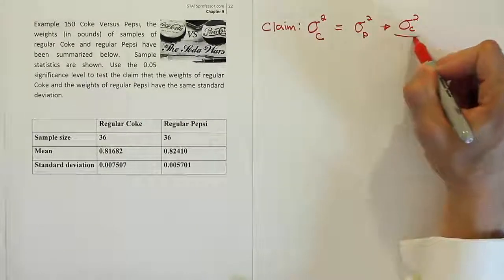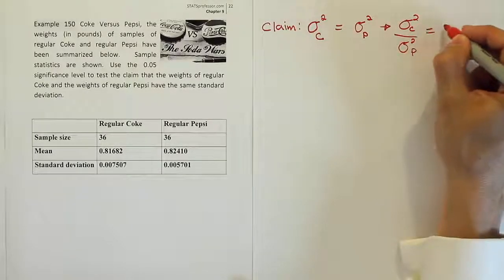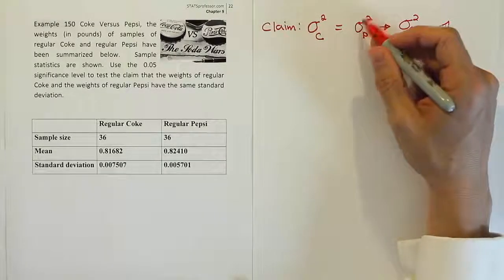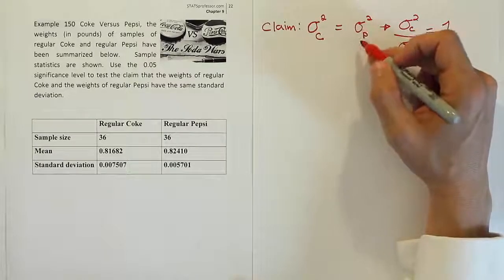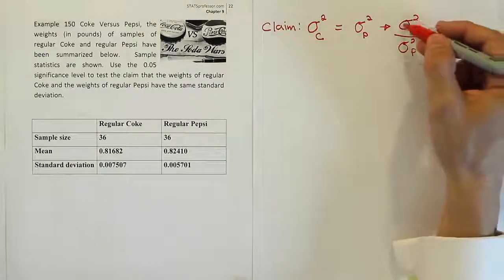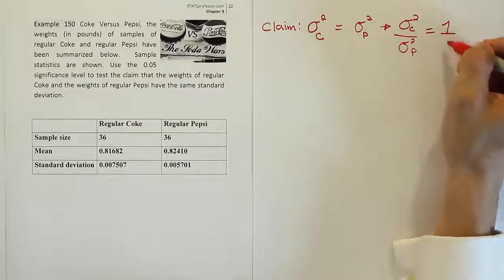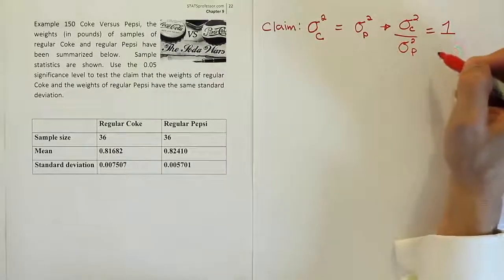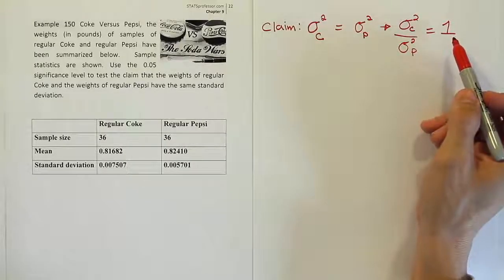The variance for Coke divided by the variance for Pepsi is equal to one, because if I divide this by the variance for Pepsi, so if I divide the variance for Pepsi by the variance for Pepsi, of course, we get one, because that's the same thing. And if I divide this by the variance for Pepsi, then I get this statement here, the variance for Coke divided by the variance for Pepsi, and that will be equal to one because I divided this by itself. That's an equivalent statement.